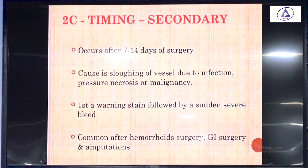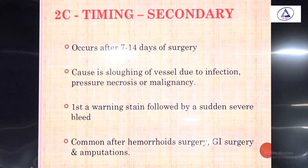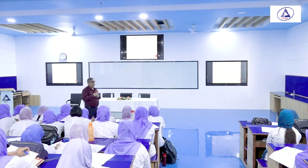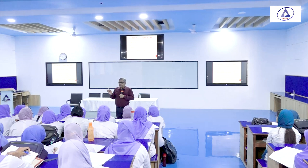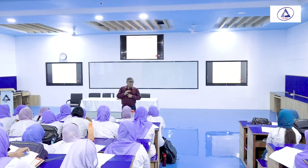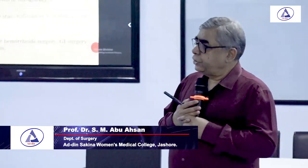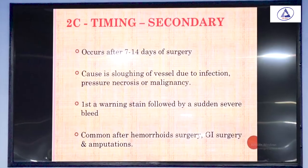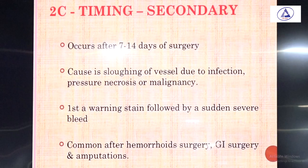If surgery was performed on a malignant lesion — malignant tissue grows rapidly — after the operation, after 7 to 14 days, one portion of the malignant lesion becomes sloughed out, the vessel becomes open and re-bleeds. These are secondary hemorrhages. It is a warning stain followed by sudden severe bleeding. You will see that the dressing has become soaked with red fluid, and then 7 to 14 days after surgery there will be sudden bleeding. This is common after hemorrhoid surgery, GI surgery, and amputations.